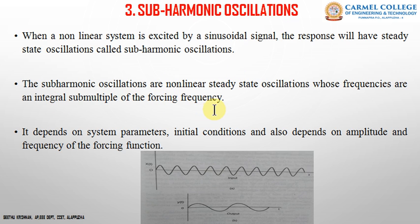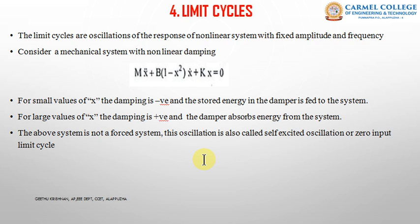The next characteristic is limit cycle, which is an important concept in nonlinear systems. Limit cycles are oscillations of the response of a nonlinear system with fixed amplitude and frequency. To explain this, consider a mechanical system with nonlinear damping — a system consisting of mass, dashpot, and spring, where the dashpot is nonlinear. If it were linear, the equation would be m·ẍ + b·ẋ + kx = 0.